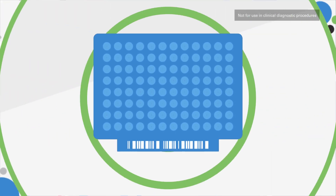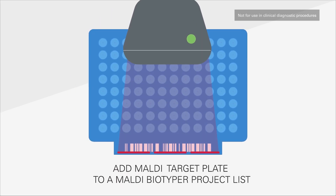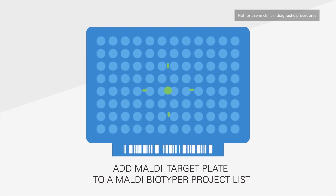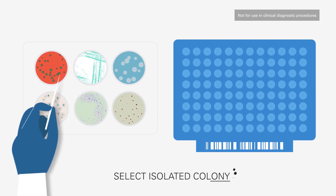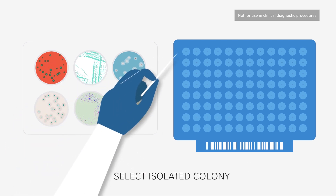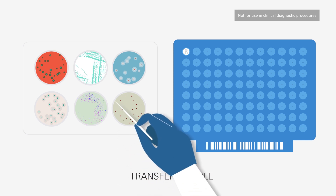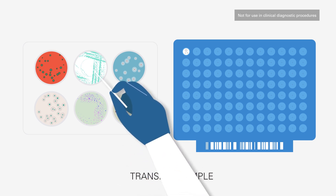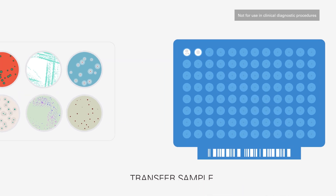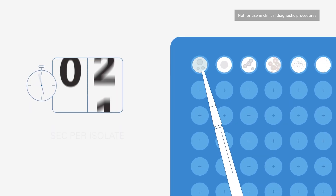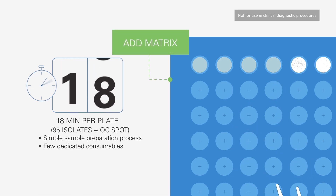To start the process, add your target plate to a MALDI Biotyper project list for easy sample recording and tracking. Next, select your isolated colony from selective or non-selective agar plates to be added to your target plate. Transfer biological material as a thin film directly onto a spot on a MALDI target plate, then overlay the material with one microliter of matrix solution and dry at room temperature.